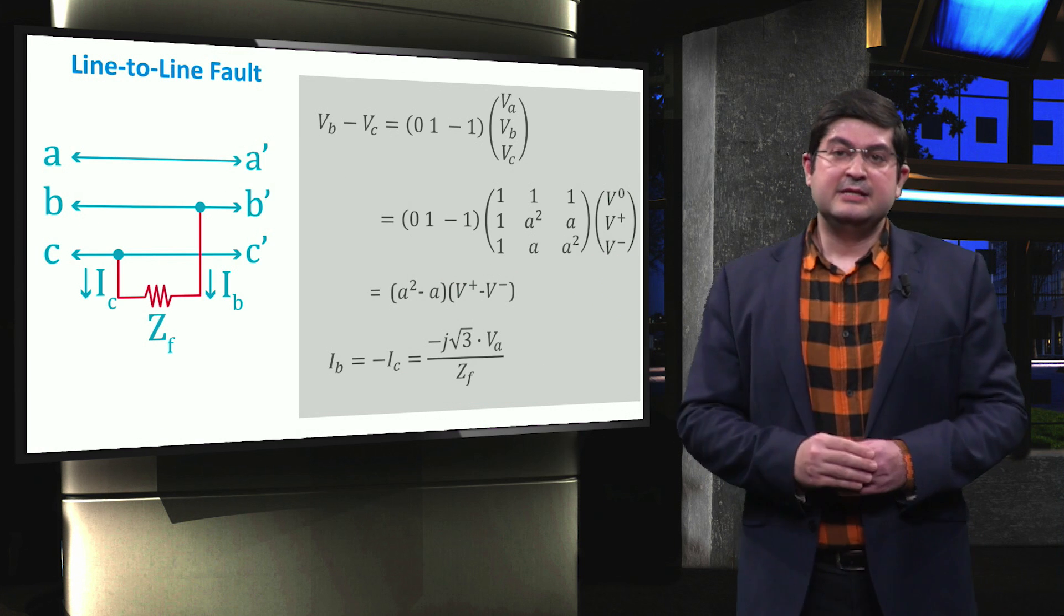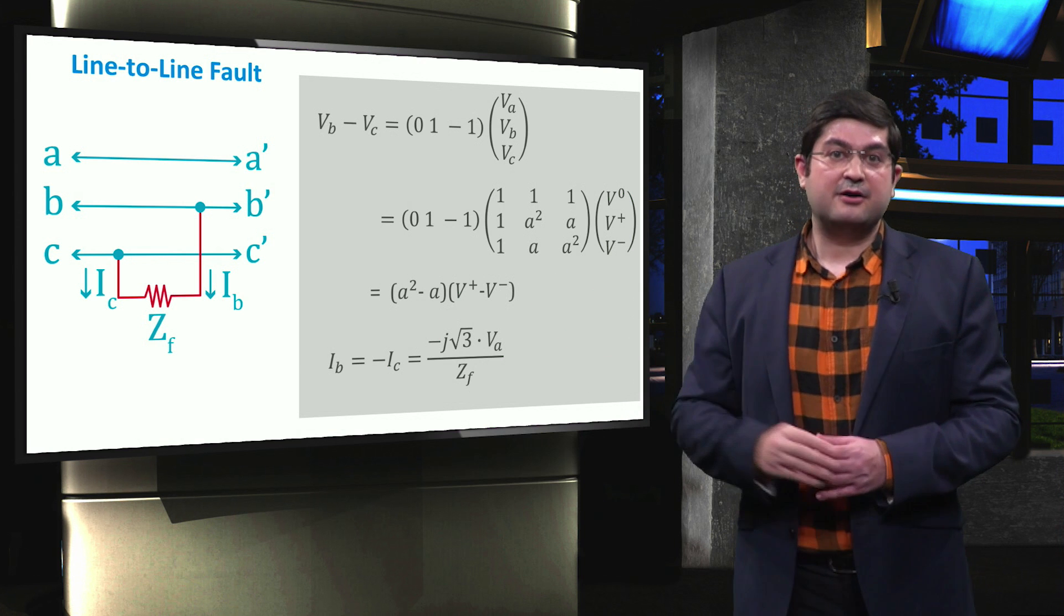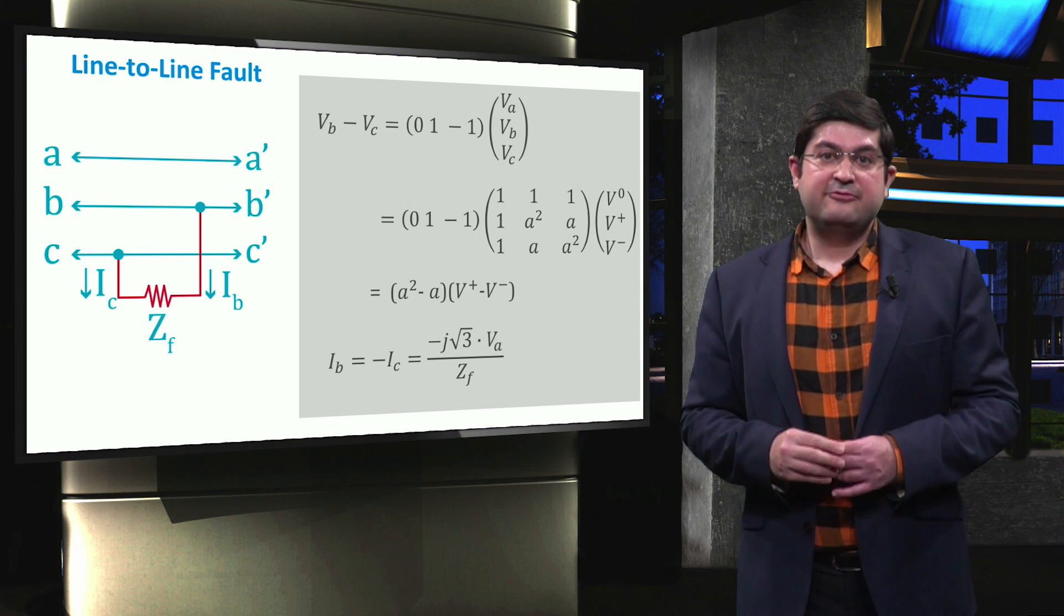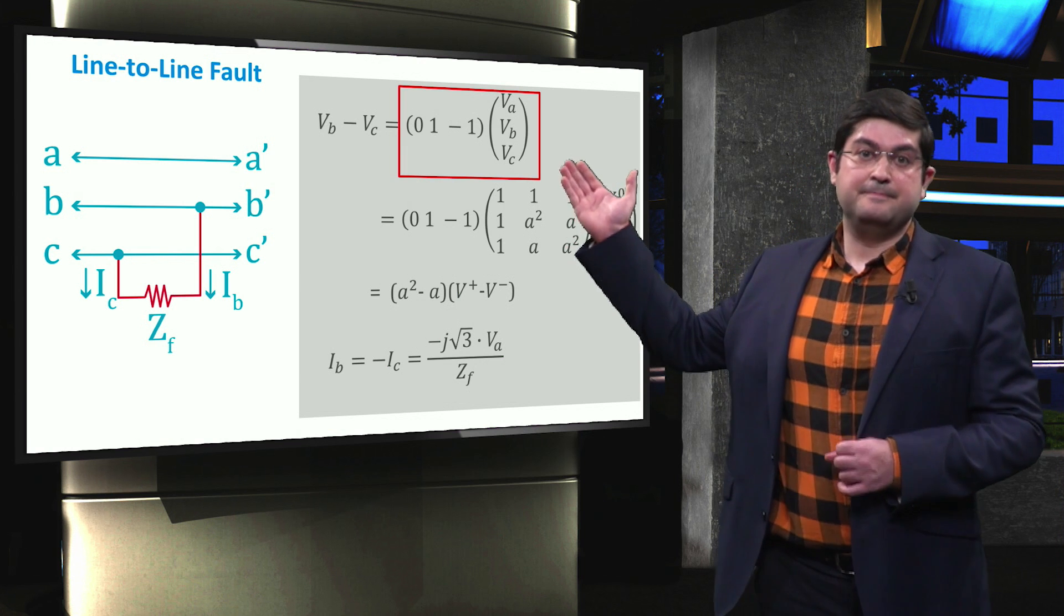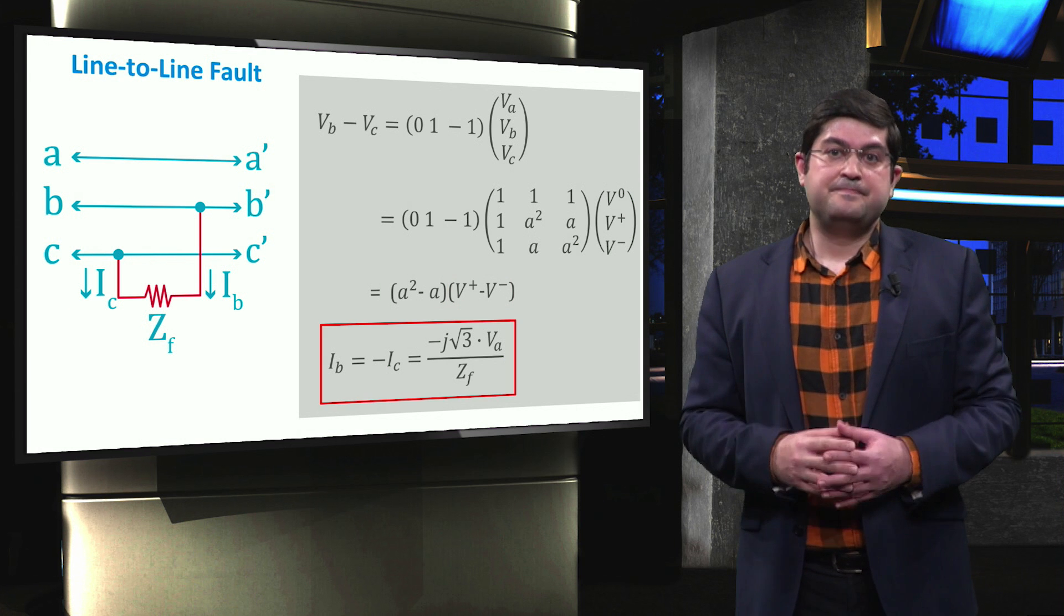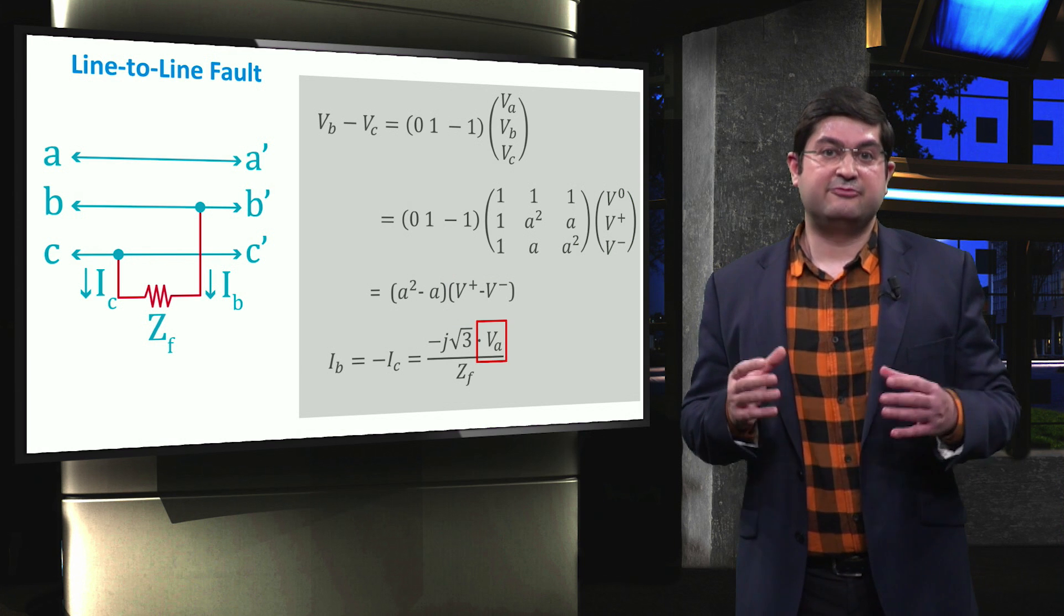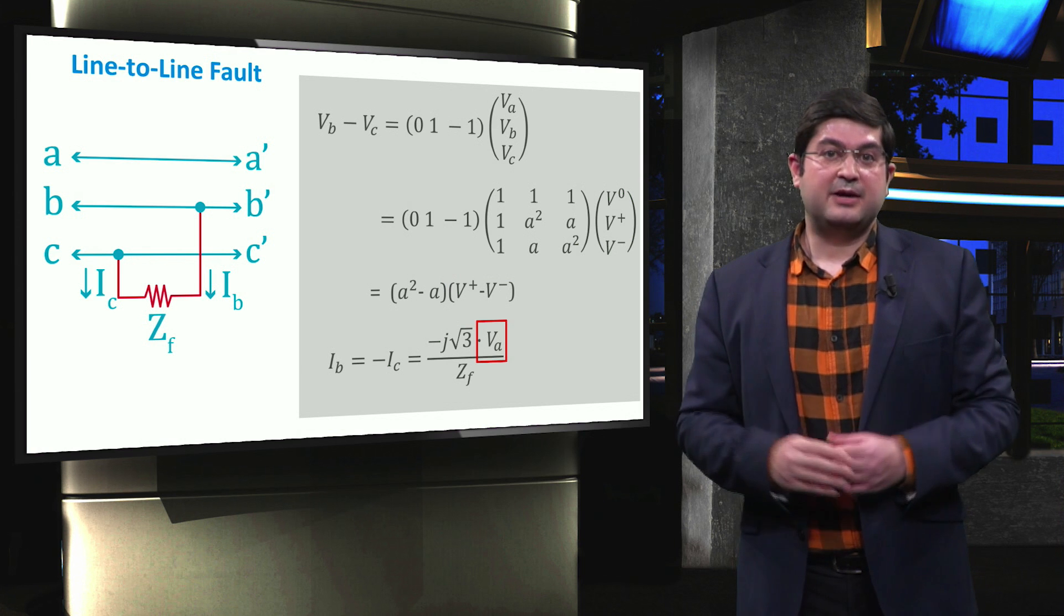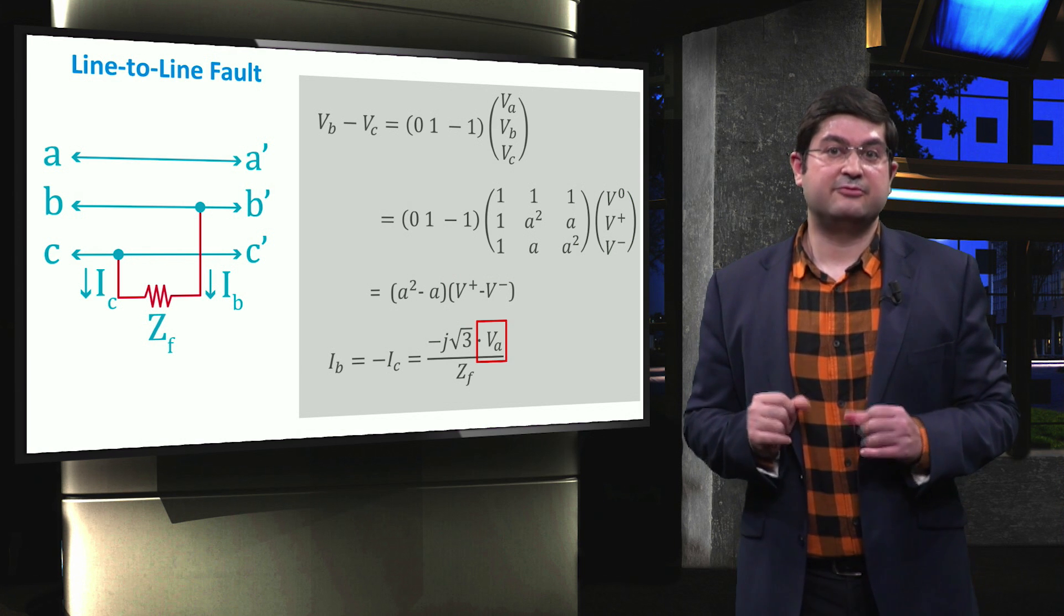Let's now analyze the line-to-line fault when phases B and C are connected together. In this case, first we show the voltage equations in the matrix representation. Then we replace the three phase voltages A, B, and C with the zero V0, positive V-positive, and negative V-negative voltages using the previously introduced sequence equation. The voltage difference between phases B and C is obtained depending on the positive and negative voltages. Finally, the fault current of phase B is obtained by the voltage of phase A, VA, multiplied by the square root of 3 divided by the fault impedance ZF.